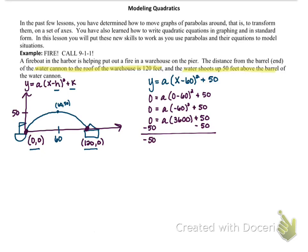This gives us negative 50 equals a times 3600. We will then have to divide both sides by 3600, and so we're left with negative 50 over 3600 equals a. If at all possible, we would want to reduce any fractions. So this one, we can actually divide both the numerator and denominator by 50 to get negative 1 over 72 equals our a value.